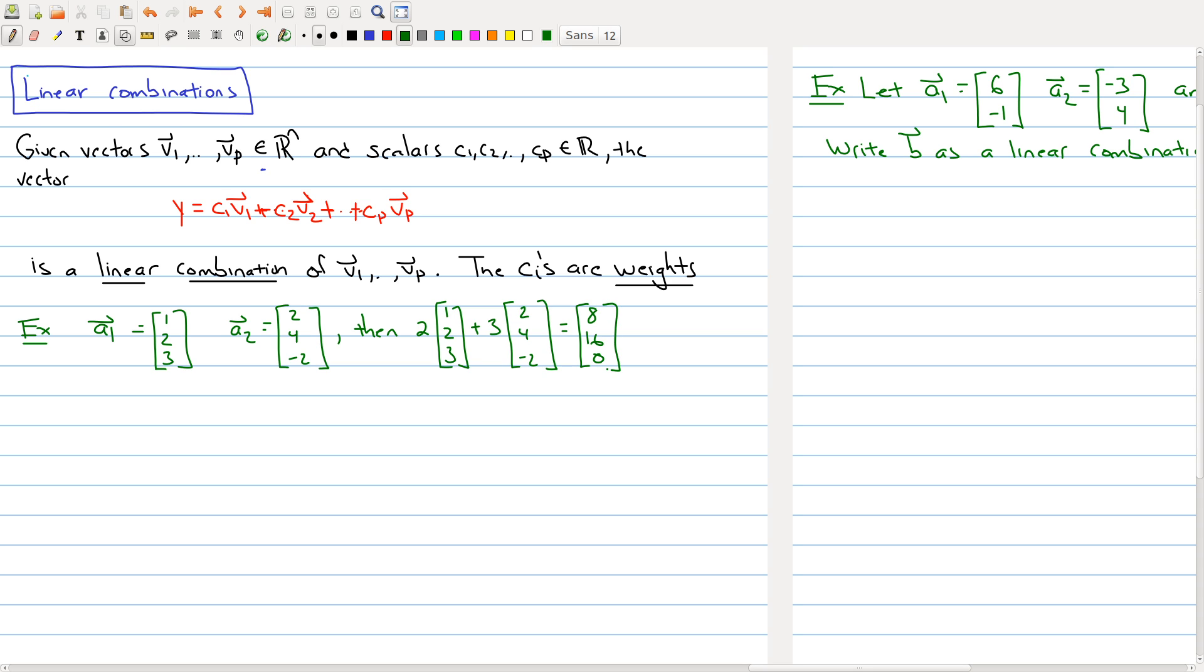And I will get [8, 16, 0]. So this is called a linear combination of my vectors a₁ and a₂. I could have started with these vectors a₁ and a₂ and I can make an infinite number of linear combinations by just changing the weights of the particular vectors.